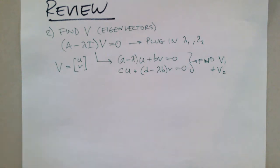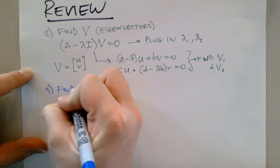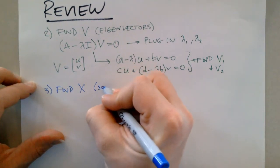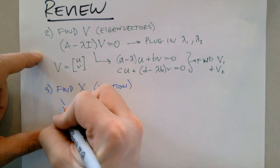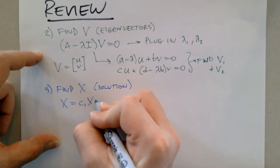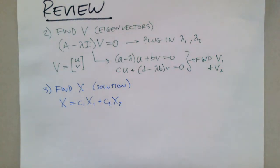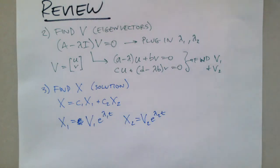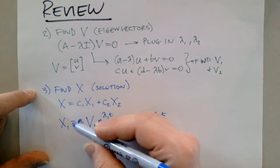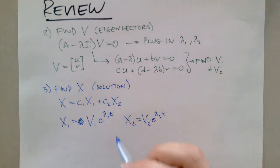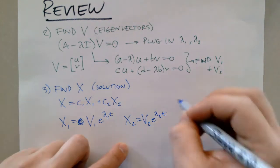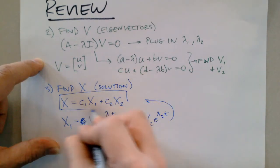The third and final step is putting it all together to find the solution vector capital X. Using the superposition principle, capital X equals C1 times X1 plus C2 times X2. Those vectors X1 and X2 are each the eigenvector V times e to the lambda t, giving us our final solution.